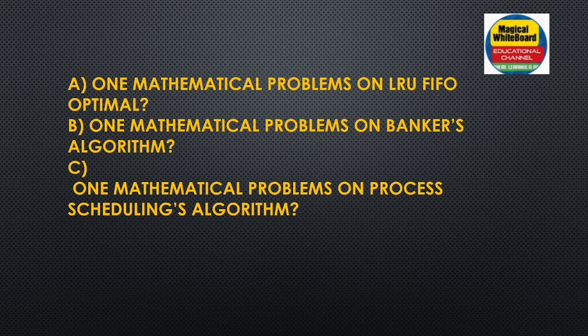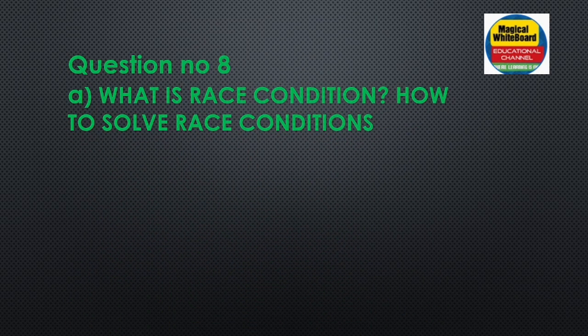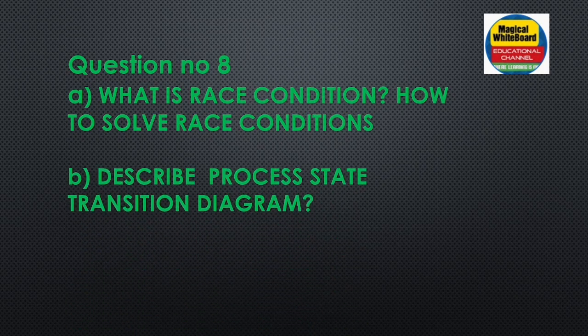Previous year questions — we can solve question number seven. Also, mathematical problems on process scheduling. Question number eight: what is race condition? Race condition problem, process synchronization, and deadlock avoidance.